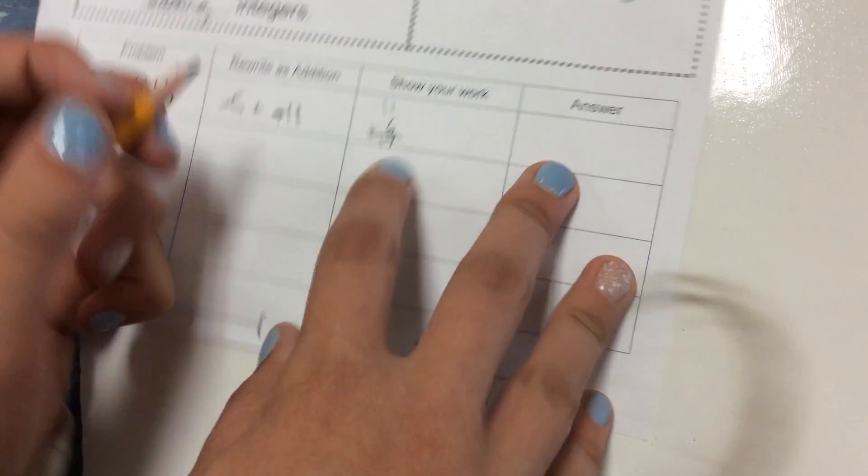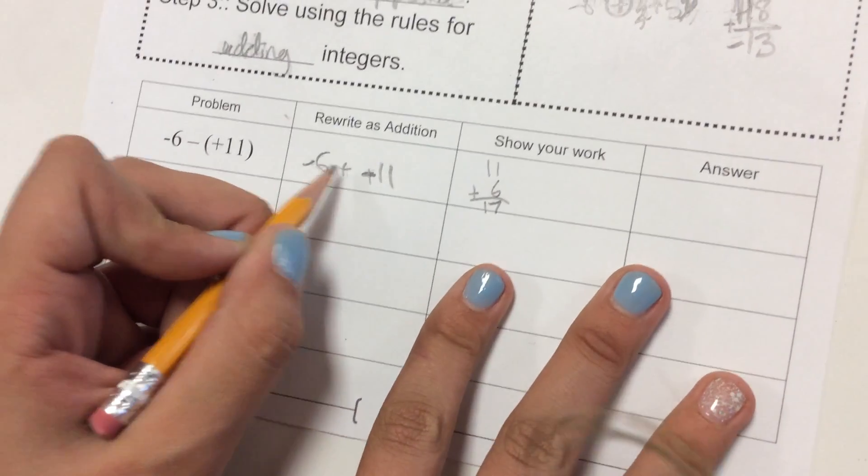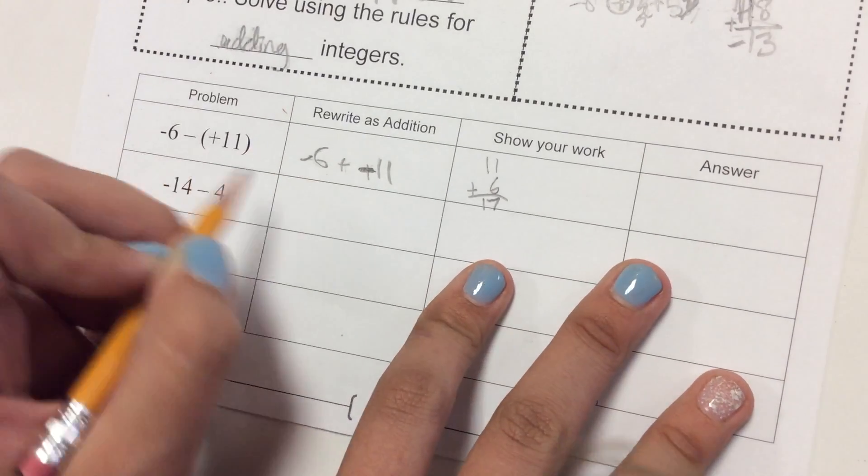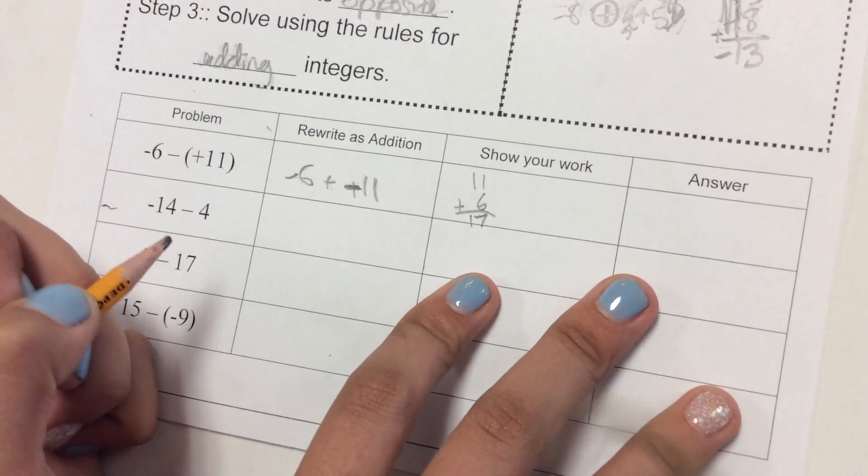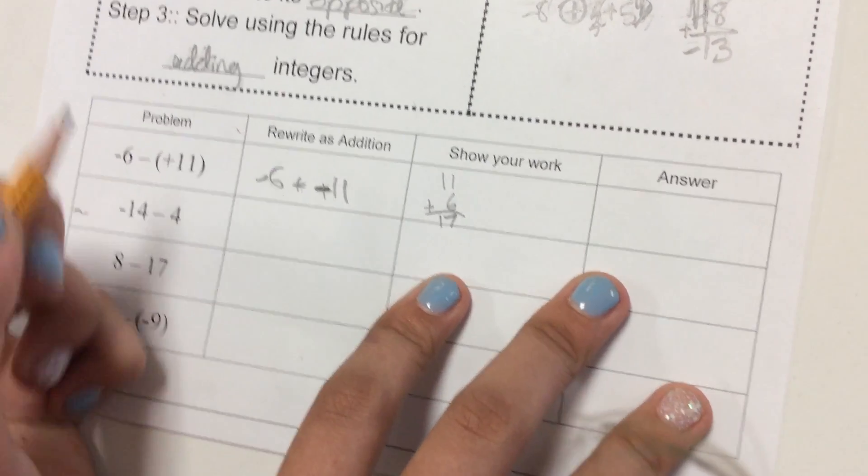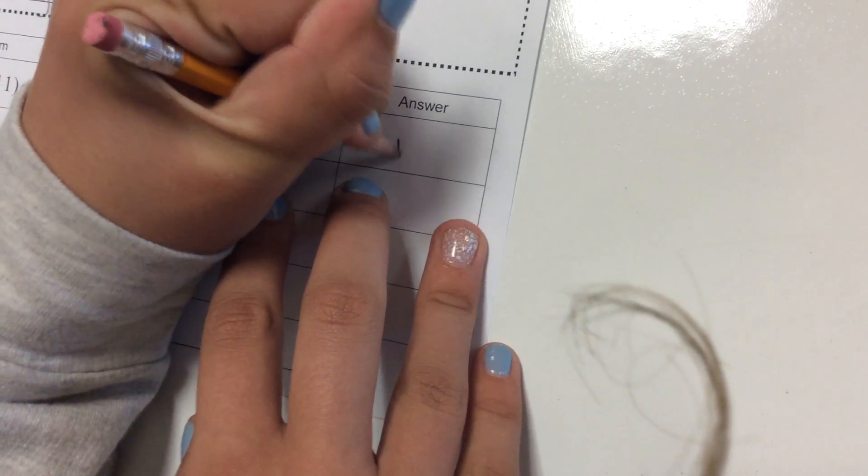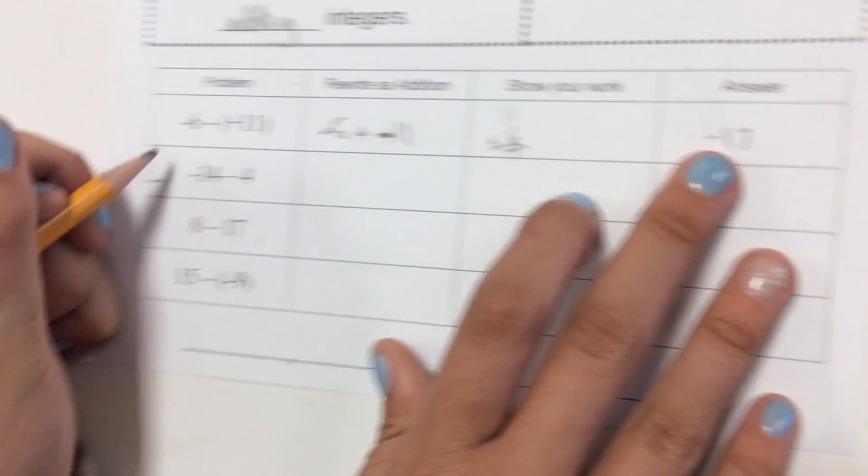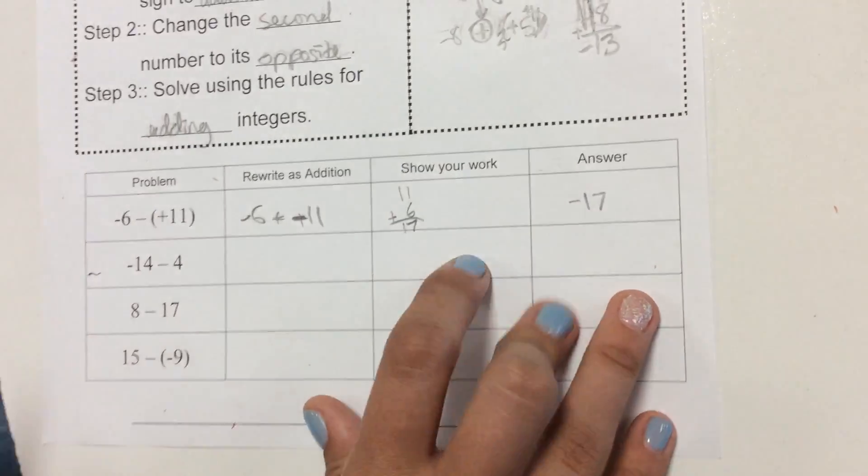And then, seventeen. Also, they're both negative because you have to change those. So the answer would be negative seventeen, since these are negative. We changed those to negative.